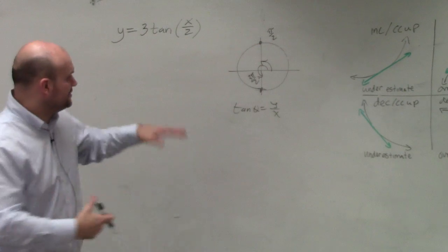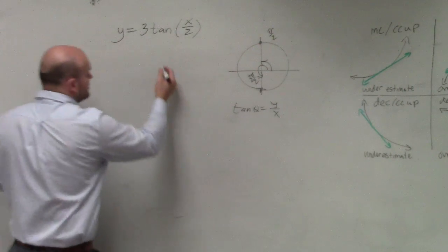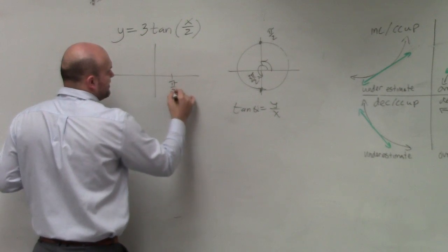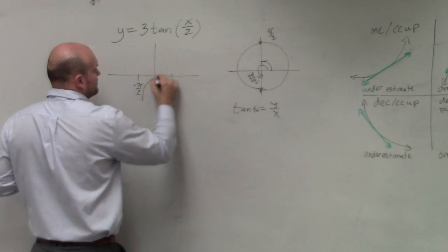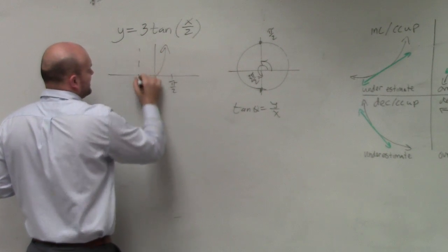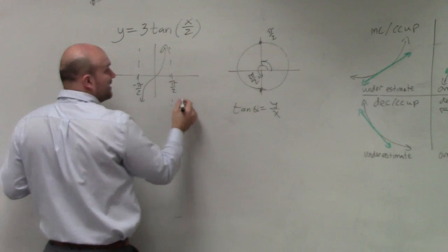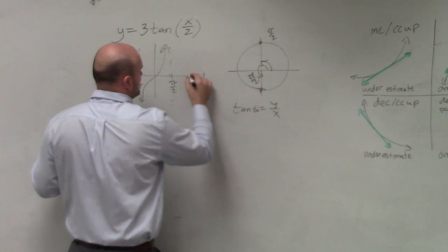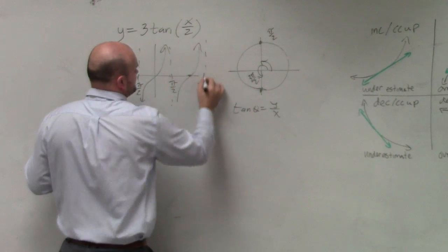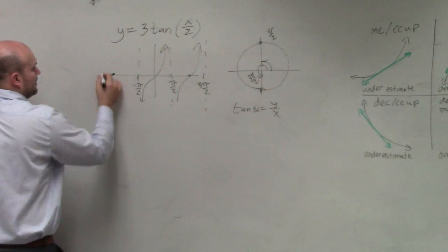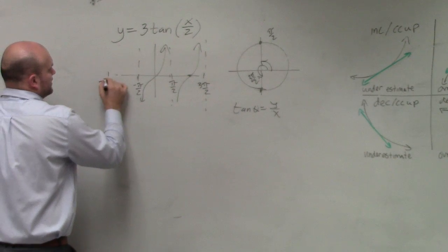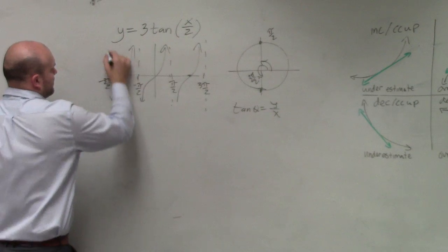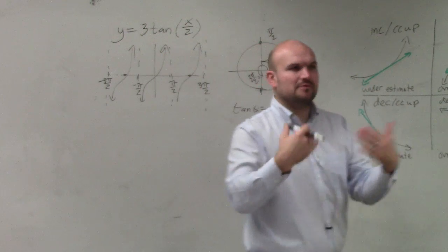And so what we figured out was you could do that in the positive or negative direction, but what this graph looked like was you had asymptotes at π/2, negative π/2. And the graph looks something like this. And then what happened is it repeated, right? Negative 3π.